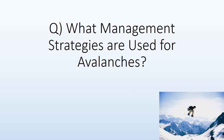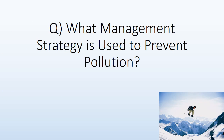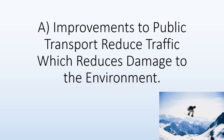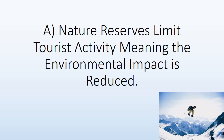Management strategies for avalanches include: tourists are informed of avalanche risks to avoid them; resorts build structures to divert and slow down snow; trees are planted to act as barriers; and controlled avalanches are set off to dislodge snow before tourists arrive. Water management strategies are used to prevent pollution. Improvements to public transport reduce traffic, which reduces damage to the environment. Nature reserves limit tourist activity, reducing environmental impact.